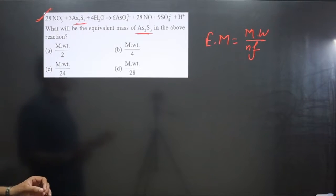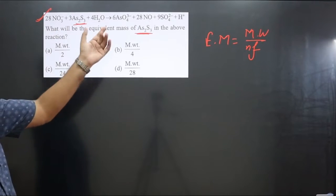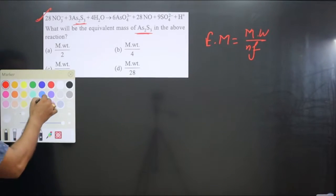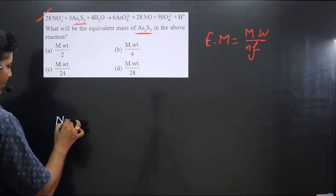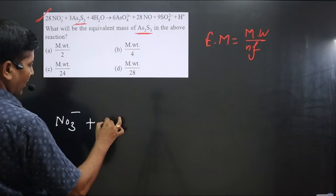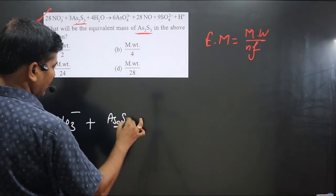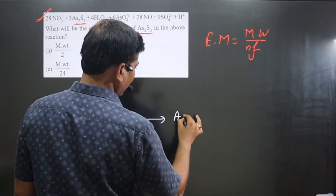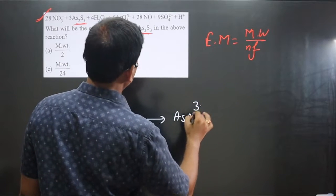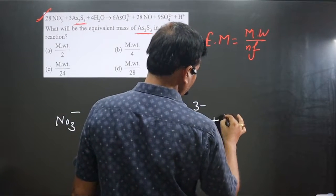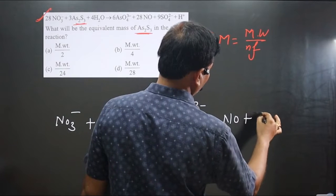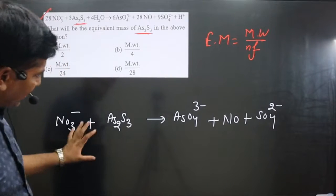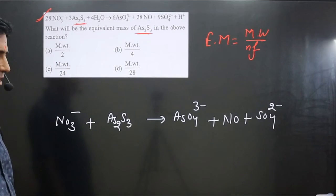We can calculate the n-factor value from an unbalanced equation as well, so the coefficients don't have any meaning in calculating the n-factor. Let me write the equation: nitrate ion plus H₃AsO₃ and water on one side, and AsO₄³⁻, NO, and SO₄²⁻ (sulfate, which is part of the medium) on the other side. This will help us calculate the n-factor value.